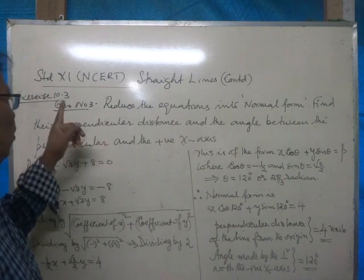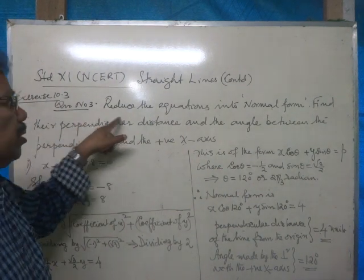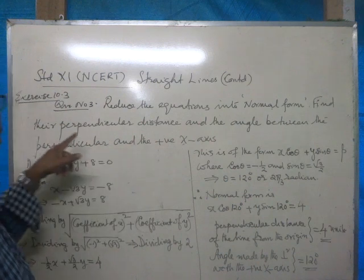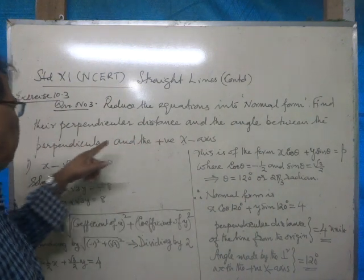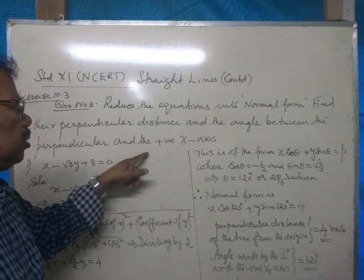Exercise 10.3, Question number 3. Reduce the equations into normal form. Find the perpendicular distance and the angle between the perpendicular and the positive x-axis.